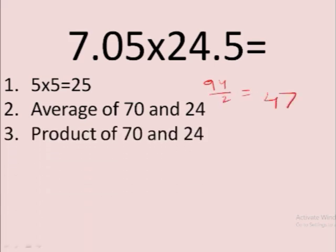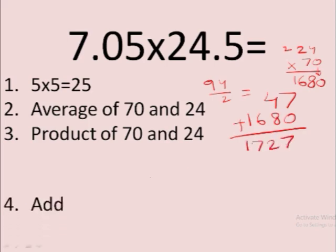Now you have to do the product: 24 by 70. So the significant number is 7. 7 times 4 is 28. 7 times 2 is 14. It makes 16, and the 0 comes here. So you have 1680. If you add it, you'll get 1727.